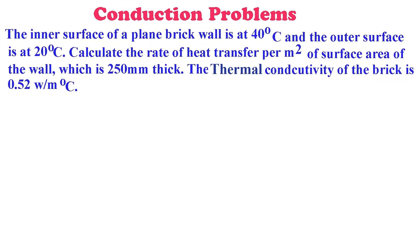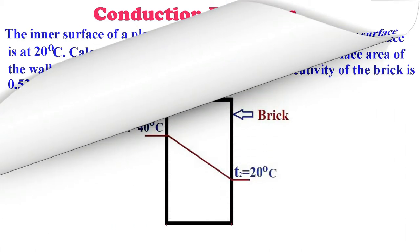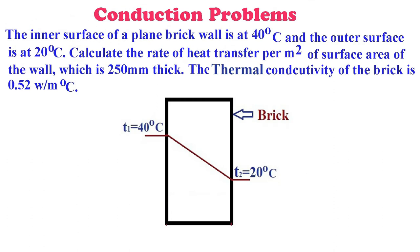First conduction problem: the inner surface of a plane brick wall is at 40 degrees centigrade and the outer surface is at 20 degrees centigrade. Calculate the rate of heat transfer per meter square of surface area of the wall, which is 250 mm thick. The thermal conductivity of the brick is 0.52 watt per meter degree centigrade. First, observe in this diagram — this is the brick.